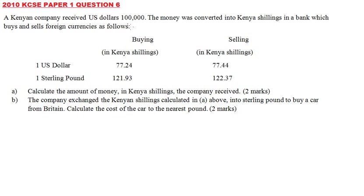A Kenyan company received 100,000 dollars and wanted to convert this to Kenyan shillings. We are required to calculate the amount in Kenyan shillings they received. In this case, the bank is buying dollars, and you are supposed to multiply the dollars by the buying price — one dollar is equivalent to 77.24 Kenyan shillings.